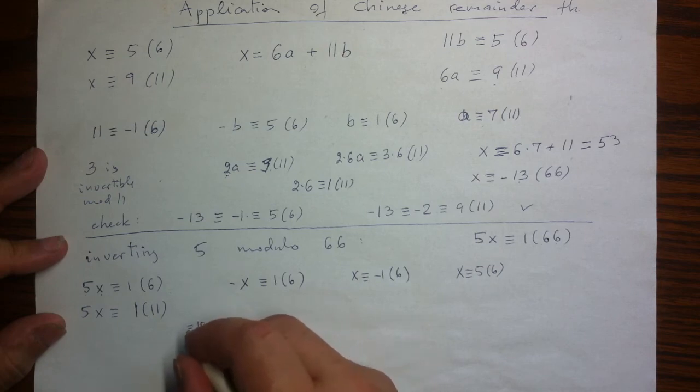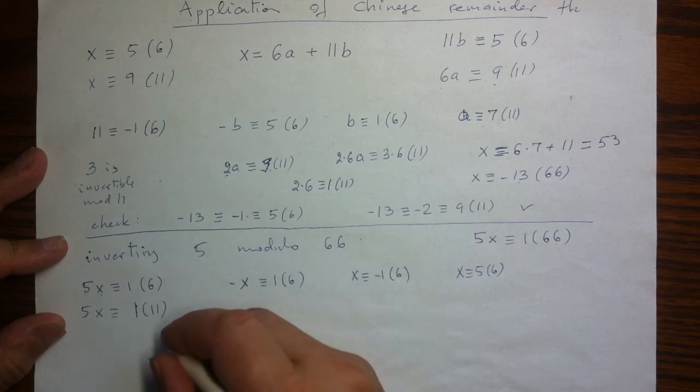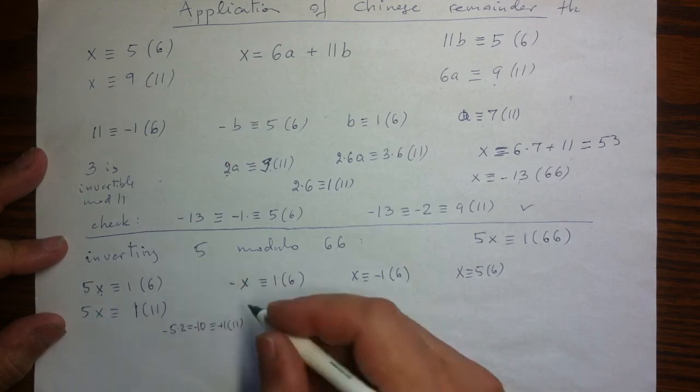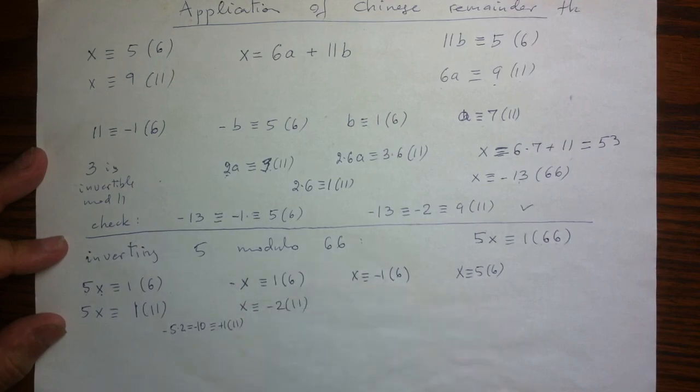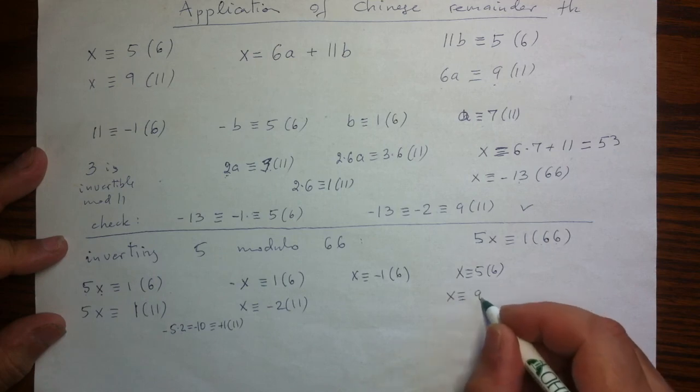So 10 is negative 1 mod 11. But 10 is also equal to 5 times 2. So 2 is not the inverse, but a product of 5 and 2 is negative 1. So negative 2 will be the inverse. If I put everywhere negative sign, I will have my inverse. So finally inverse x is congruent to negative 2 mod 11, which is again the same as 9 mod 11.